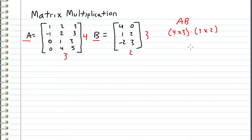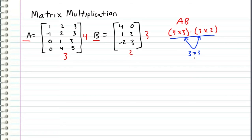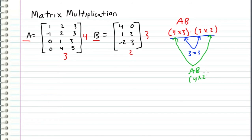To do that, we write the dimensions out and compare the two inner dimensions. As long as these are equal — in this case three equals three — then we can multiply the matrices. If they are not equal, then we can't multiply. Then we compare the two outer dimensions, and this gives us the dimensions of the product. So A times B would be a four by two matrix.